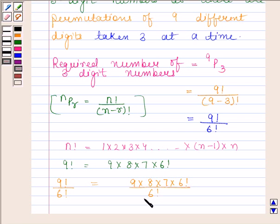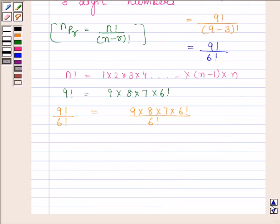Canceling out 6 factorial, we are left with 9 into 8 into 7, and this is equal to 504.